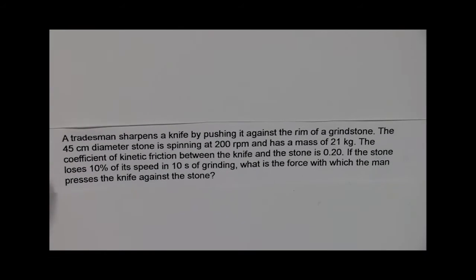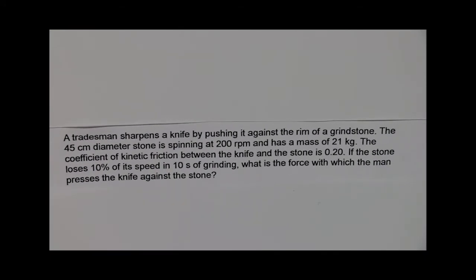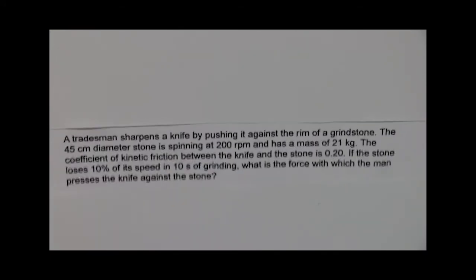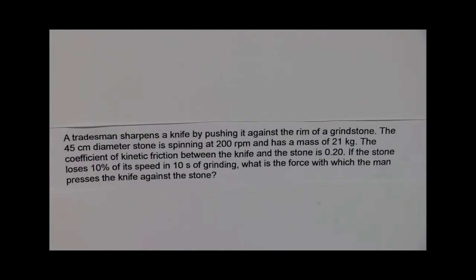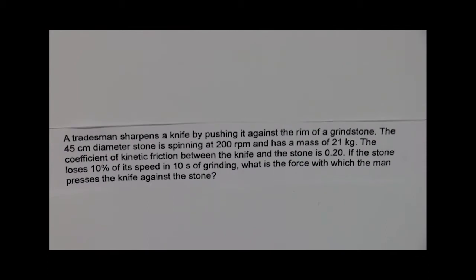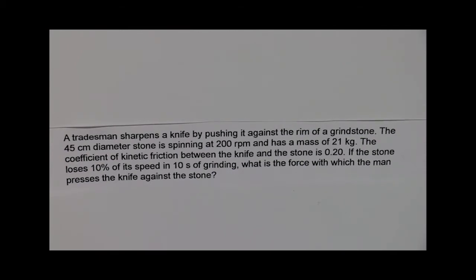The question of the day involves a tradesman sharpening a knife by pushing it against the rim of a grindstone. The 45 centimeter diameter stone is spinning at 200 revolutions per minute and has a mass of 21 kilograms. The coefficient of kinetic friction between the knife and the stone is 0.2. If the stone loses 10 percent of its speed in 10 seconds of grinding, what is the force with which the man presses the knife against the stone?